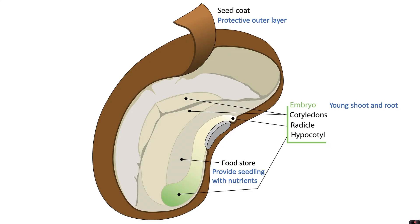Each seed, although they may look very different, will have three main parts. It has a seed coat, which is a protective outer layer. It has an embryo, which is the young shoot and root which grow to become the plant. And it has a food store to provide the seedling with nutrients it will need in its early stages, because until it develops into a larger plant with leaves, it won't be able to do photosynthesis and produce its own food — so it relies on its food store until then.